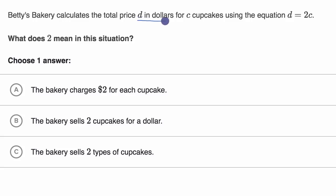So remember, d is in dollars for c cupcakes. Now one way to think about it is, what happens if we take d is equal to two times c? What happens if we divide both sides by c? You have d over c is equal to two. And so what would be the units right over here? Well, we have dollars, d dollars, over c cupcakes. So this would be two dollars per cupcake. This is the unit rate per cupcake. How much do you have to pay per cupcake?